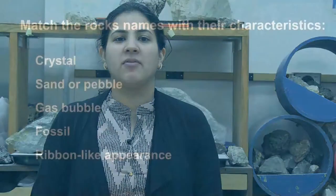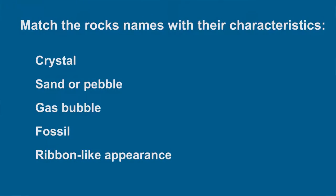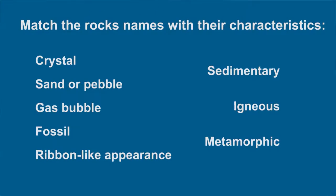Keeping those diagnostic characteristics in mind, let's try to match the rock characteristics with their rock names. On the left side of the screen we have displayed the following characteristics: crystals, sand or pebbles, gas bubbles, fossils, and ribbon-like appearance. On the right side we have the rock types: sedimentary, igneous, and metamorphic. Which belong together?